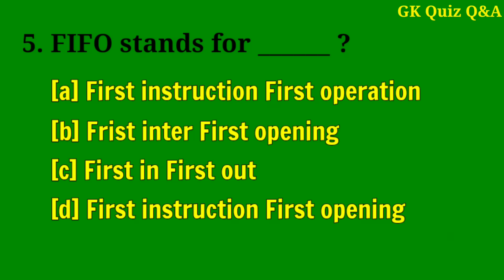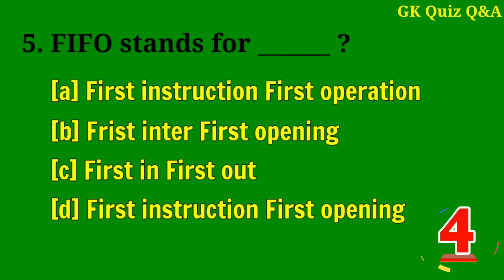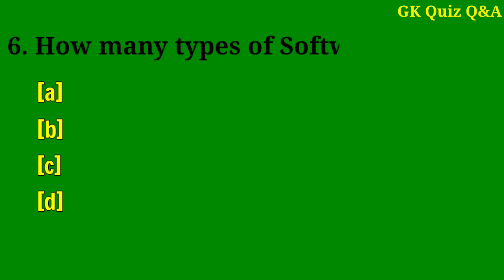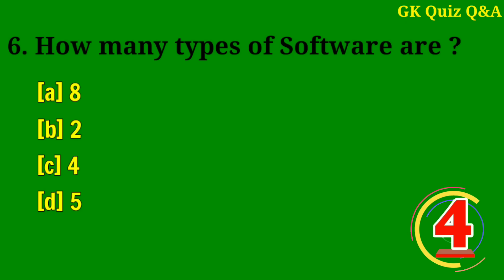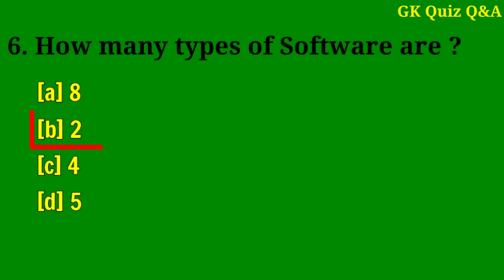FIFO stands for? Answer C: First In, First Out. How many types of software are there? Answer B: Two types.